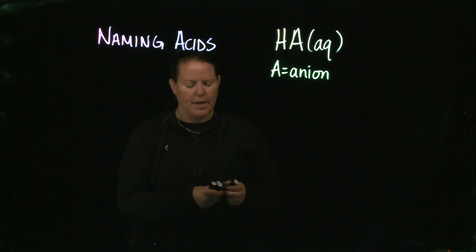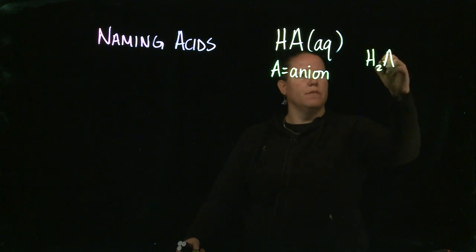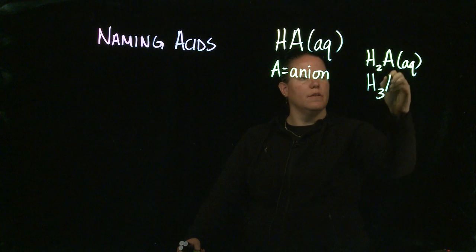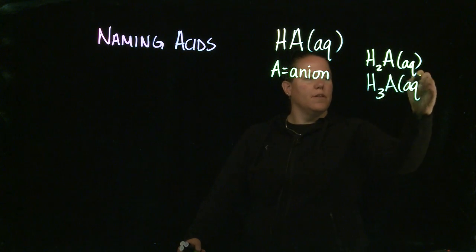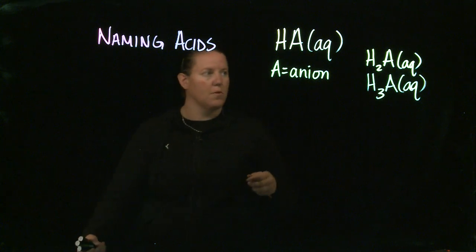If I had an anion that had a minus two charge, I would have two H's in front, thus making a diprotic acid. If I had three, a minus three charge, there would be three H's in front, a triprotic acid and so on and so forth.